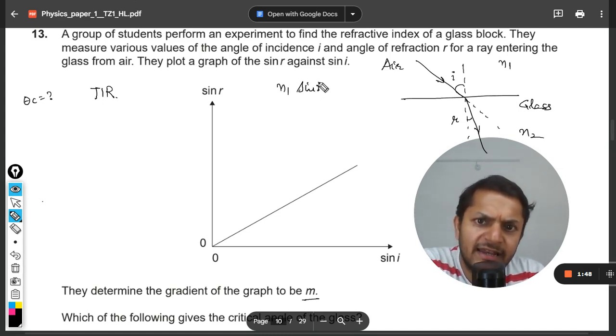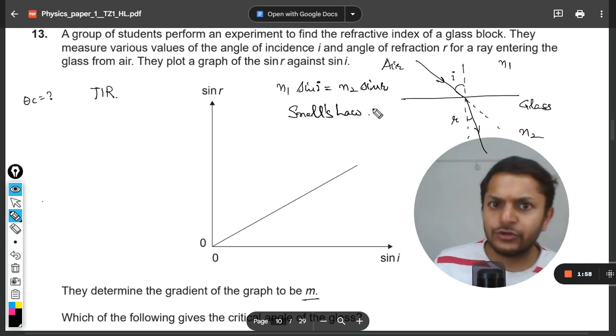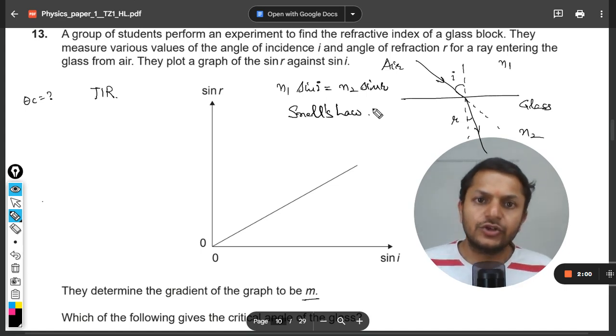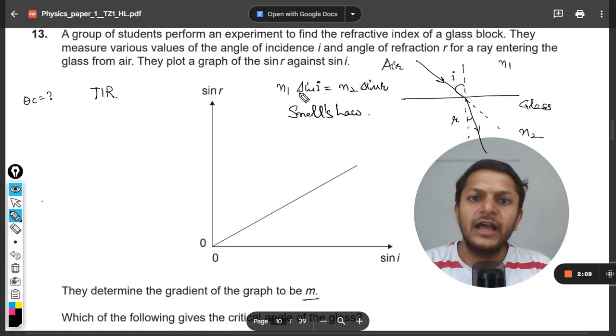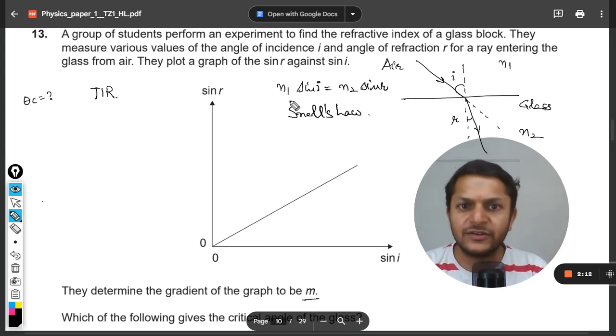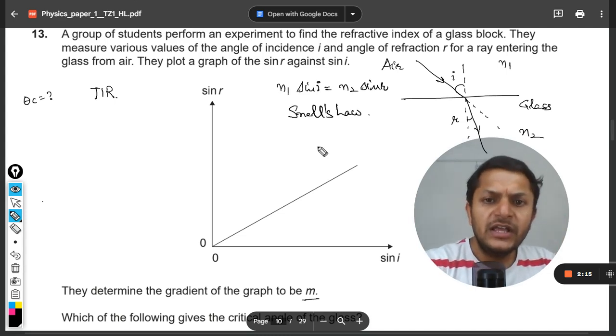Clearly n1 sin i will be equal to n2 sin r. Well, this is Snell's law, so I have directly written Snell's law. So be very particular about Snell's law: n1 is the refractive index which is containing i, n2 is the refractive index which is containing r. And that is why n1 into sine i is equal to n2 into sine r. You can just remember it in this formation.